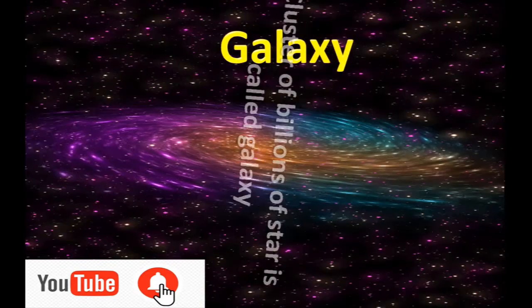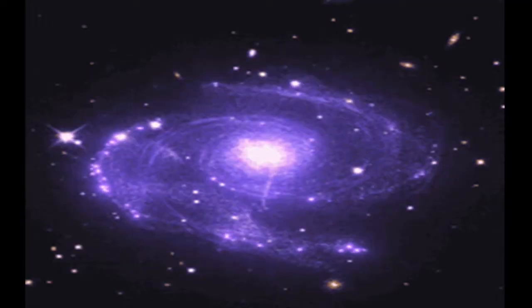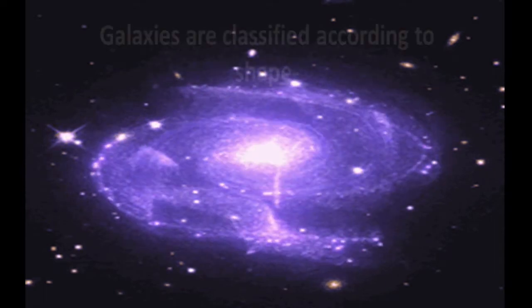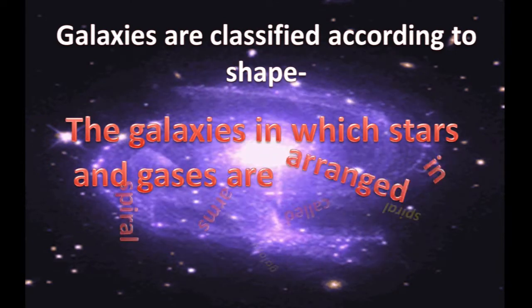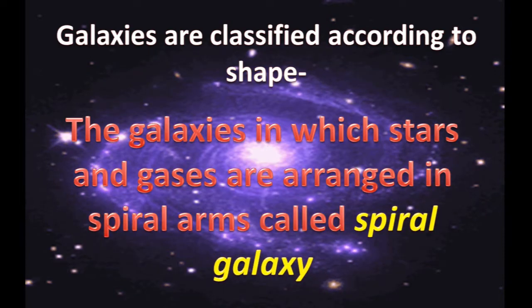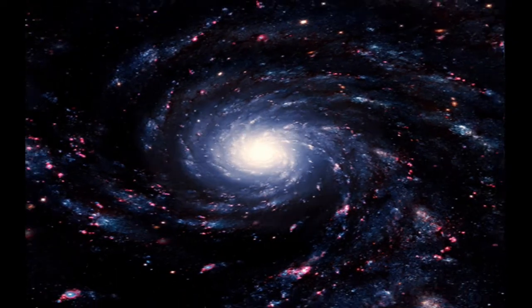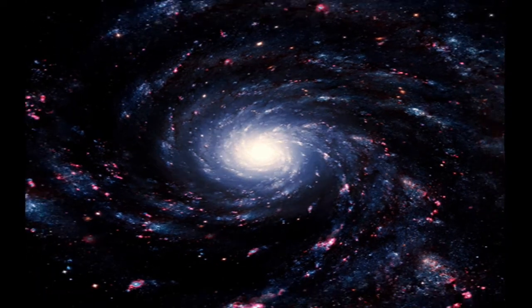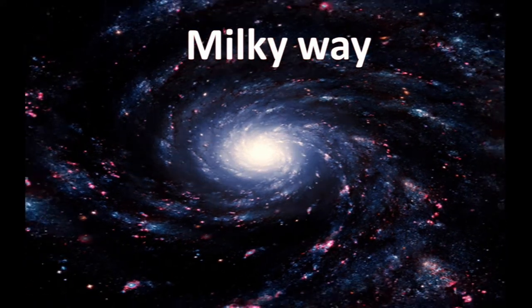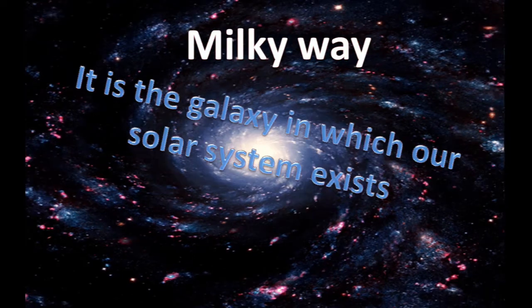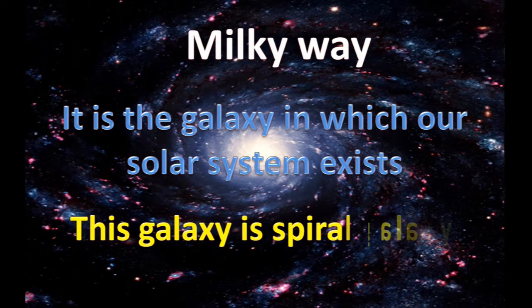Galaxy. Cluster of billions of stars is called Galaxy. Galaxies are classified according to the shape. The galaxy in which stars and gases are arranged in spiral arms called Spiral Galaxy. Milky Way is an example of galaxy. It is the galaxy in which our solar system exists. This galaxy is a spiral galaxy.